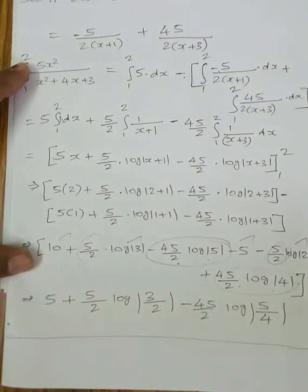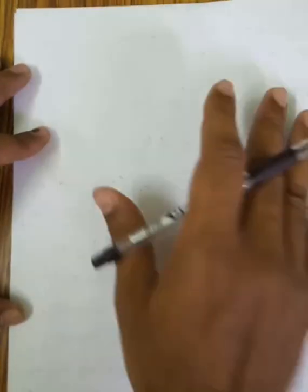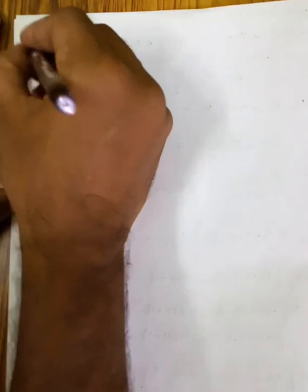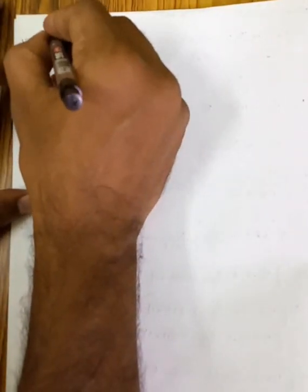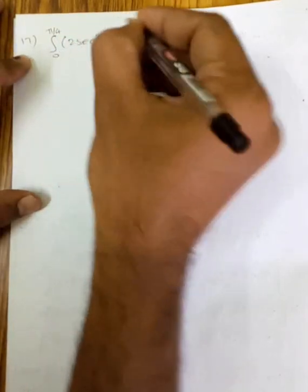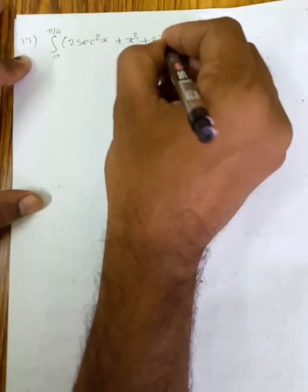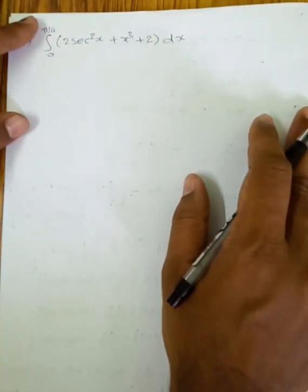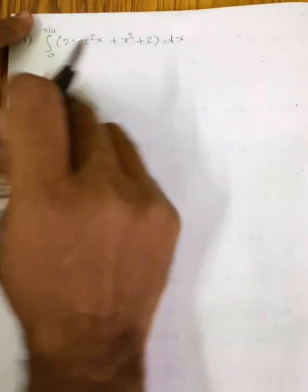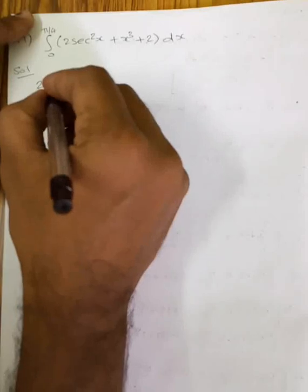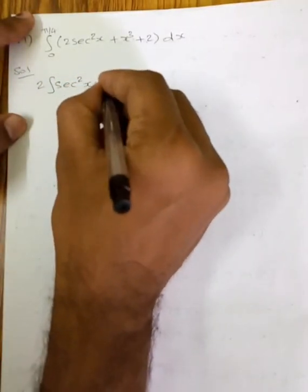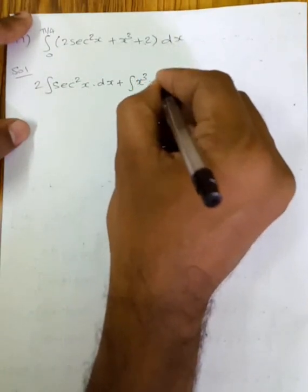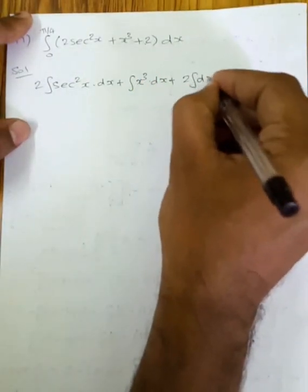Now 17th question: integration of 0 to 5π/4 of (2sec²x + x³ + 2) dx. We split the integral into three parts: 2 times integration of sec²x dx, plus integration of x³ dx, plus 2 times integration of dx.